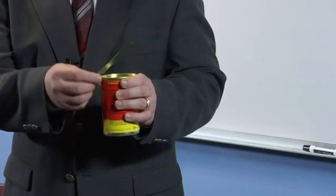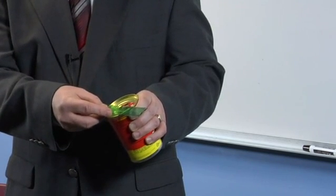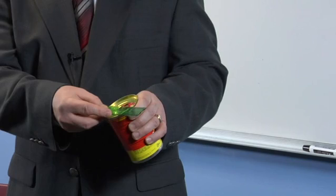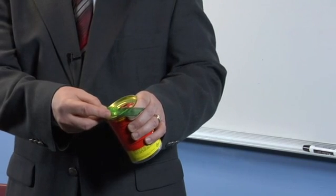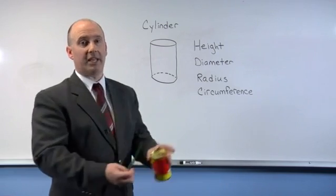And the width, if we measure it, is equal to 3 inches. Now notice that when I measured the width, I actually measured straight across the diameter of the circle, which is the shape of the top of the can.